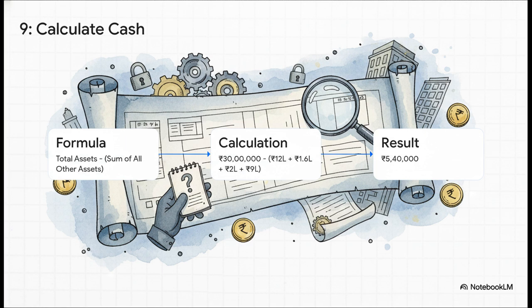Cash becomes our balancing figure, or what we sometimes call the plug. We know our total assets must be 30 lakhs. We simply subtract all the other assets we've so logically deduced: the fixed assets, both types of stock, and the debtors. The amount that's left, 540,000 rupees, that's our cash balance. And with that, the puzzle is complete.